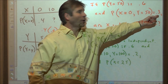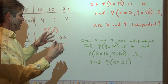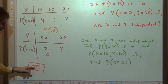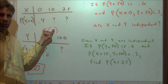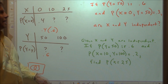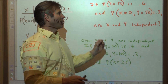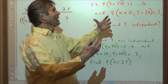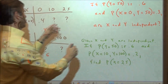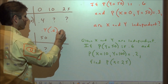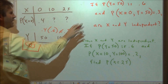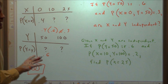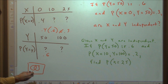Just like with events in a Venn diagram, if two random variables are independent, the joint probability must equal the product of the individual probabilities. Since 0.4 × 0.6 = 0.24, not 0.3, the conclusion is that random variables X and Y are not independent of each other.